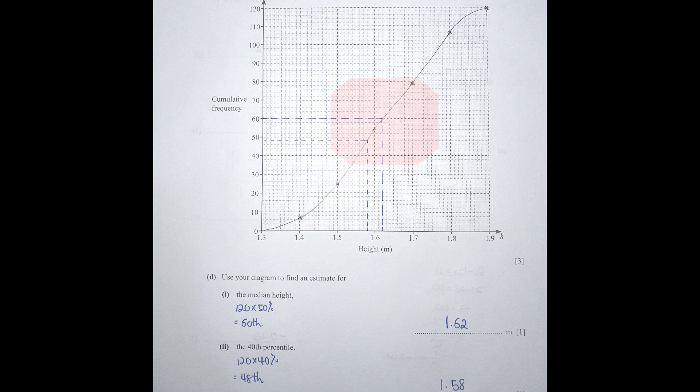For part 2, the 40th percentile: I took 120 times 40% to get 48. Tracing 48 back on the cumulative frequency diagram gives a result of 1.58 meters.